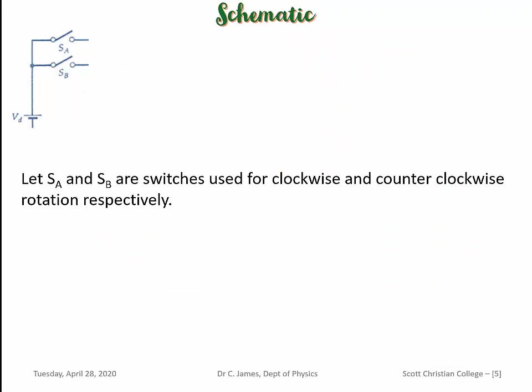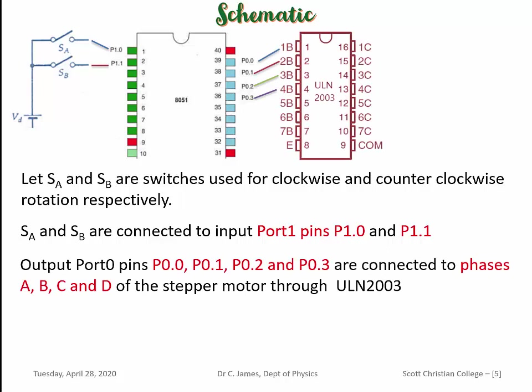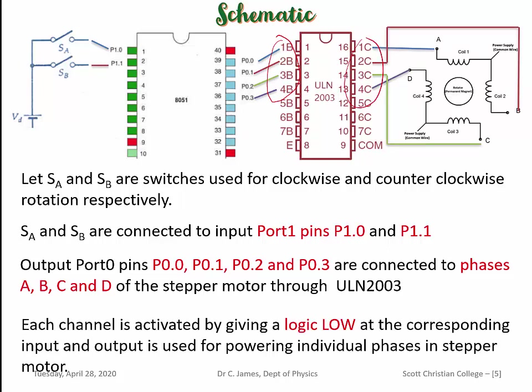The switches S_A and S_B are connected to Port 1 — S_A to P1.0 and S_B to P1.1. We have to generate suitable output to the ULN-2003: P0.0 is connected to 1B, P0.1 to 2B, P0.2 to 3B, and P0.3 to 4B. A low input to these pins generates a high output; outputs 1C, 2C, 3C, and 4C are connected to field coils A, B, C, and D respectively. To activate a field coil, we give a low input to the ULN-2003, which then generates 500 mA current to energize the coil. This is the schematic of our system.